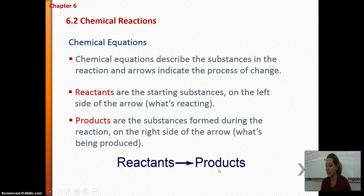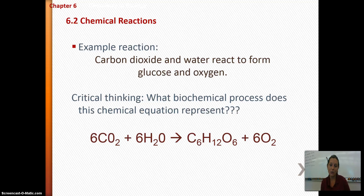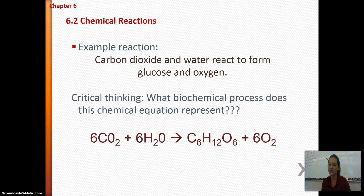Take a minute on number 16: circle the left side of the equation and label those as reactants, and circle the right side and label those as products. In this diagram, carbon dioxide and water are the reactants, and they're being used to make glucose and oxygen. The process that makes glucose and oxygen — plants do it all the time — is photosynthesis. That is the equation for photosynthesis.